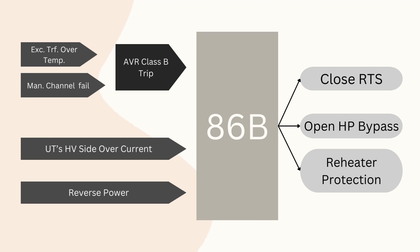In the Class B protection scheme, some electrical protections are also provided where instantaneous tripping is not required. Protections of the turbine go with 86B, and some excitation system protections — like excitation transformer over-temperature and manual channel fail — will not cause any instantaneous damage to the system. Along with these, UT HV side over-current protection and one contact of the reverse power relay are also provided.